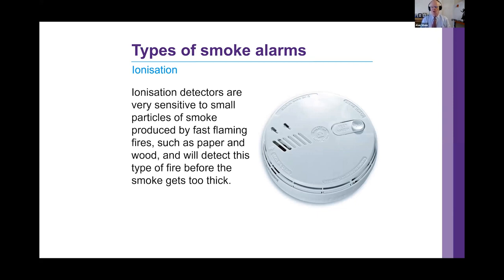The first, and most commonly used type of detector, is an ionization device. As you can see, it's very sensitive. The choice of design of a fire, smoke or carbon monoxide detector is underpinned by the fire risk assessment — you'll be hearing me say that quite a lot. This type of detector is used in most domestic environments. Alarms can be battery or mains powered, and the detectors can be interlinked.